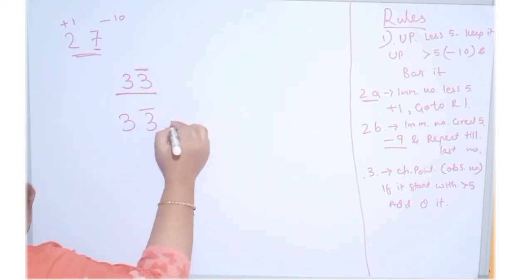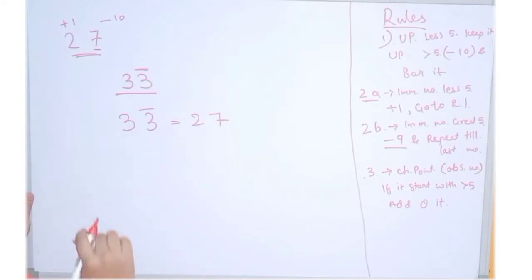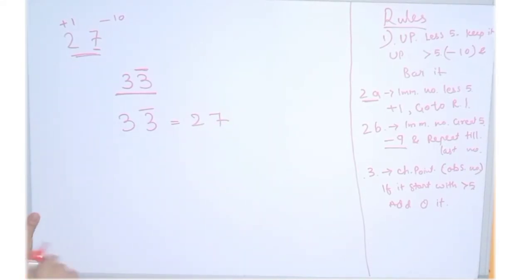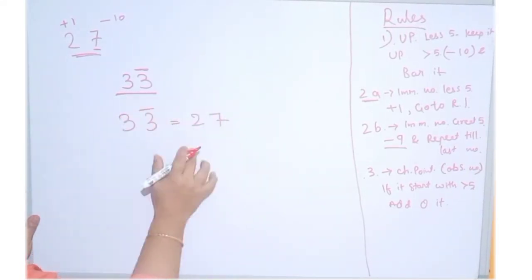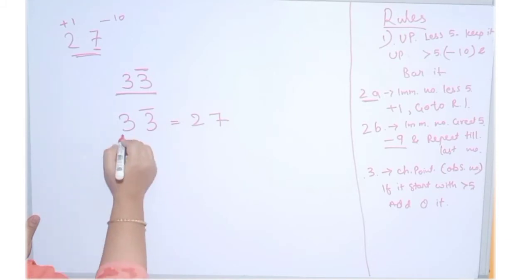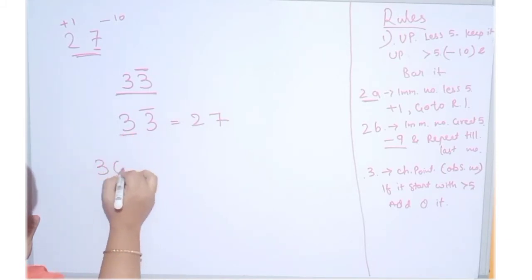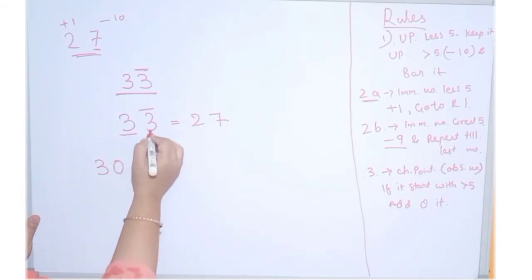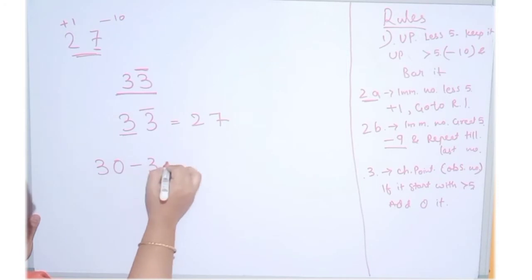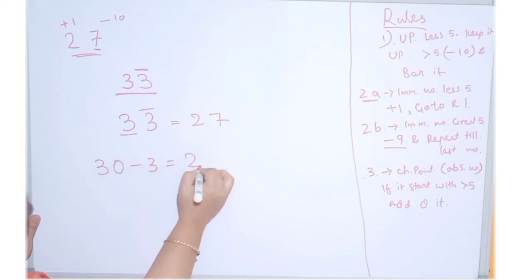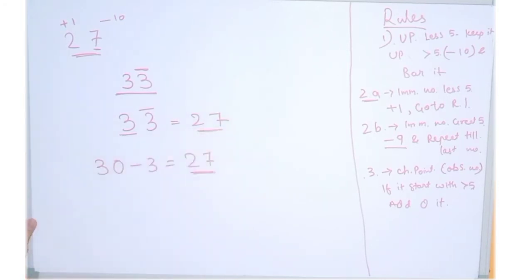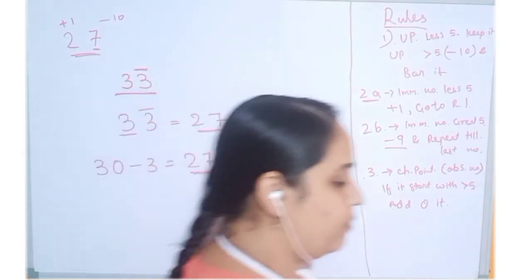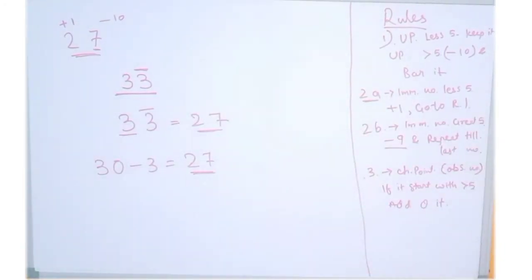This equals 27. How do we verify? This is the positive number — 30 is positive and 3 is negative. So 30 minus 3 gives us 27. Correct! Let us see a few more examples.